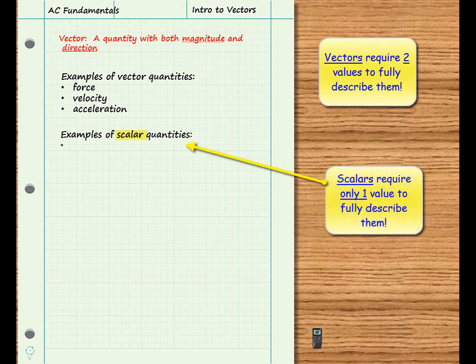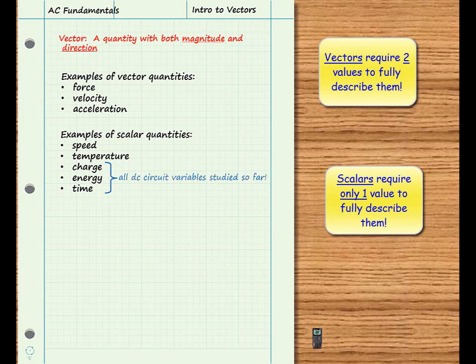Examples include speed, temperature, charge, energy, and time. In fact, all the electric quantities we are familiar with from our study of DC circuits are scalar quantities. They can be fully described using only one value.